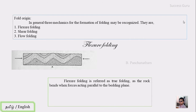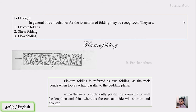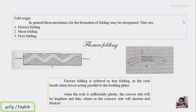Layer parallel compression — this is what we call Flexural Folding. So layer parallel compression acts and then a Flexural Fold forms. The topmost convex side of the rock undergoes stretching.